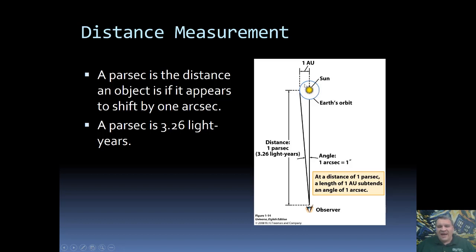As we get a change of point of view of two AU, we actually split it in half, so it's only one AU. But as we get a change in position of one AU, if the object appears to shift by one arc second, then it is defined as one parsec away.